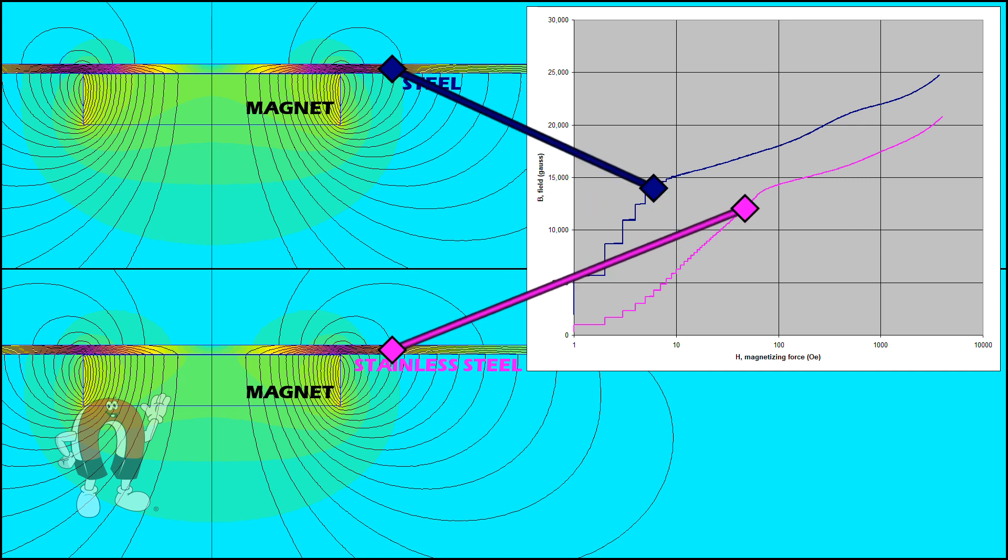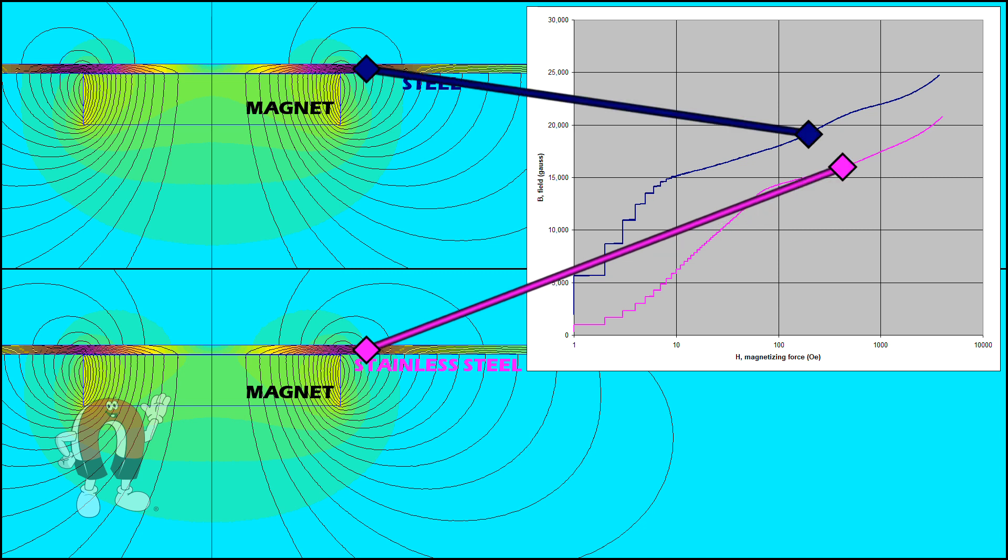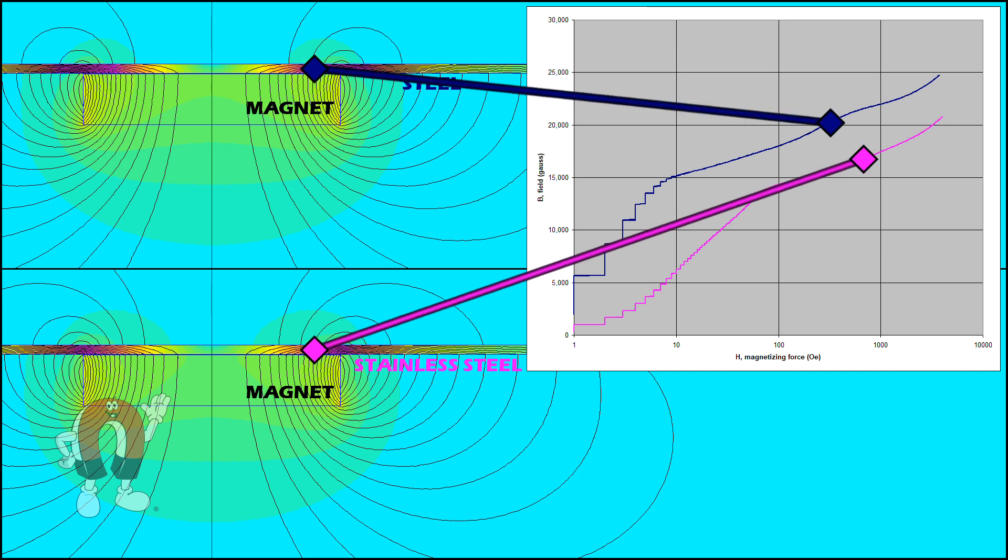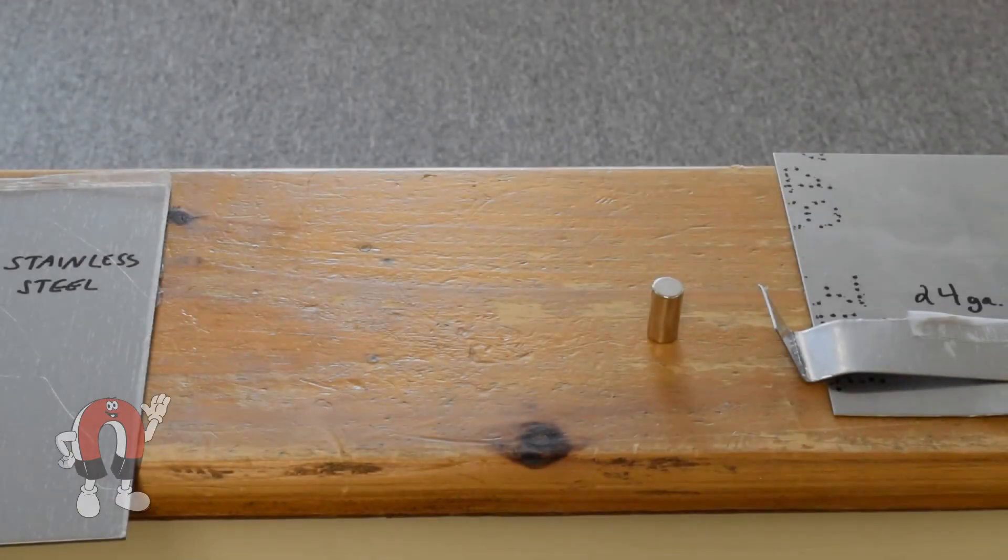We created these images using a computer simulation, or finite element analysis. The computer uses these curves to solve for every point in our study. In the magnet, in the steel, in the air around it. But it's not something we can compute on the back of a napkin.